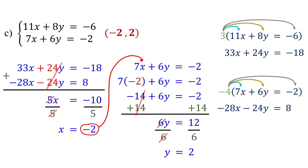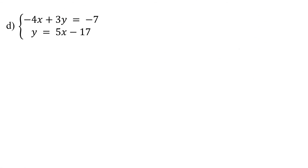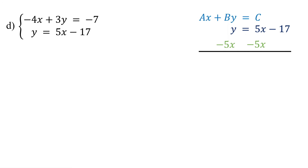In this and the previous two examples, both equations were given in standard form, so the x, y, and constant terms were aligned, making it convenient to add the equations together. However, in the next example, the second equation is not in standard form. So our first step will be to rewrite it in standard form. To do that, subtract 5x from both sides of the equation. Cancel these, and we get negative 5x plus y equals negative 17.